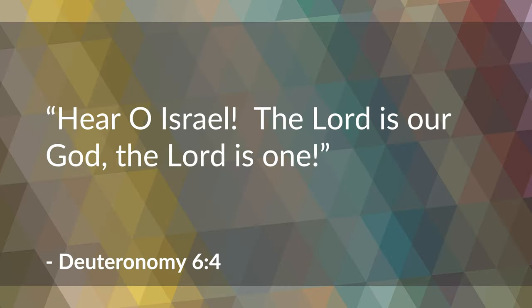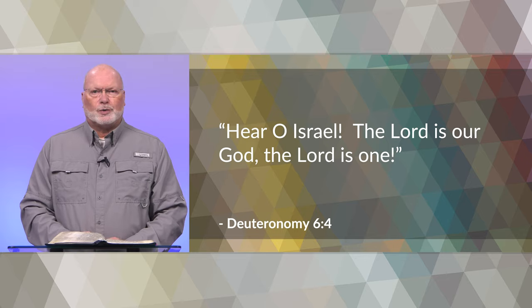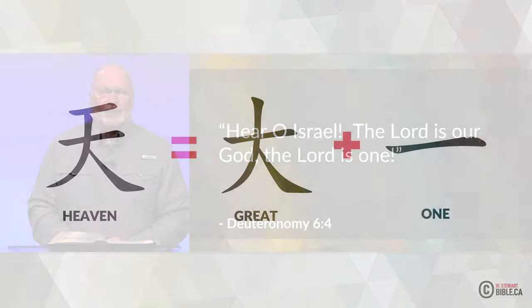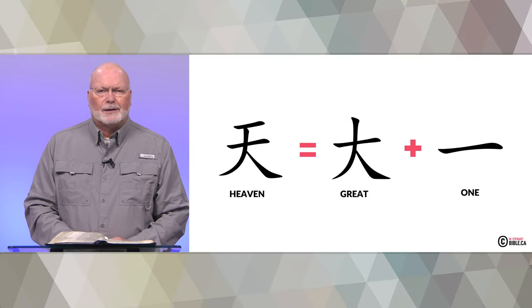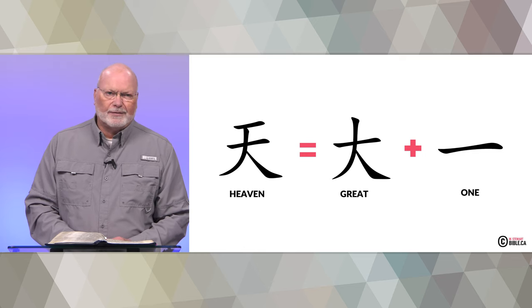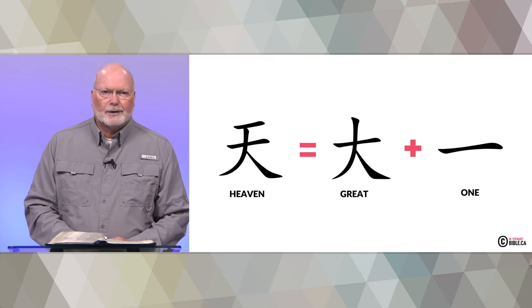In Deuteronomy chapter 6 verse 4 we read: 'Hear, O Israel, the Lord is our God, the Lord is one.' One God is what the Hebrews believed in, and one God is what the Chinese originally believed in. Here we have the Chinese character for heaven, made up of two other characters: one for 'great' and a hash mark representing 'one' — giving us 'the great one.' He is in heaven, and that's how the Chinese would express the idea of heaven as the place of the great one, the one God they called Shang-Di.